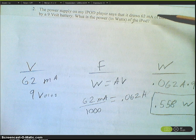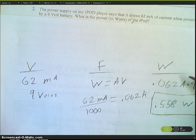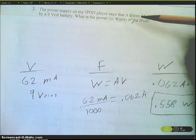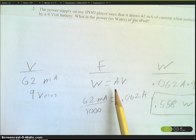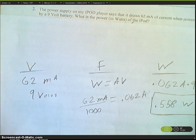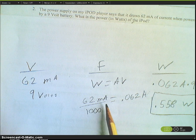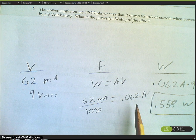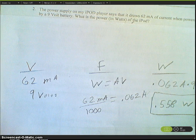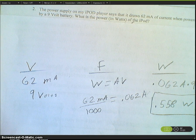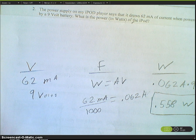Looking at the problem, we have 62 milliamps and 9 volts, and we need to find the power in watts. We use the equation watts equals amps times voltage. But first we're going to convert milliamps to amps by dividing by a thousand. Then we just multiply amps and volts together and we get the answer in watts: 0.558 watts.